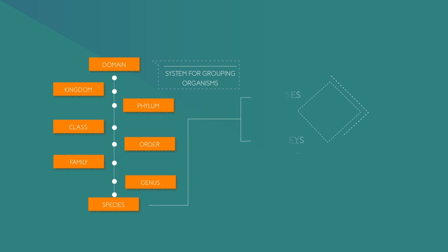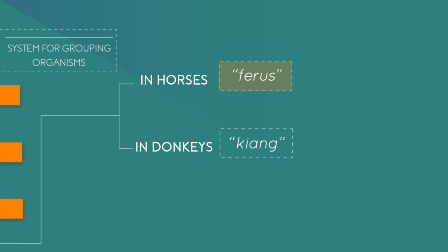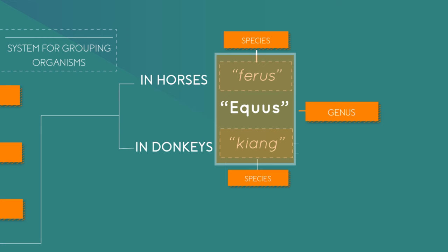The species group is accepted as the smallest unit of biological classification and is always given a Greek or Latin name. In horses this name is ferrus, whilst in donkeys the species name is asinus. Both species belong in the larger group, or genus, known as Equus.